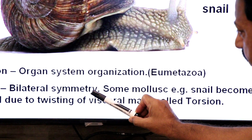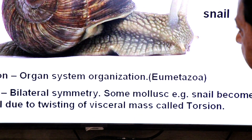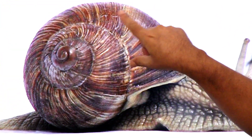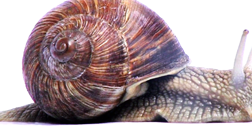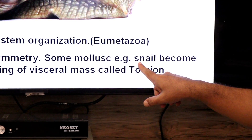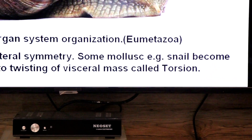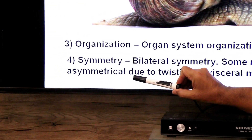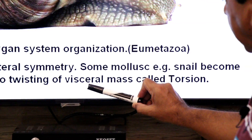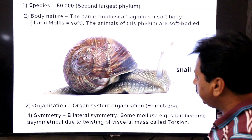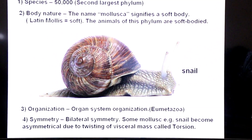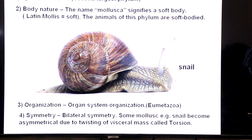However, in some Mollusca, symmetry is not present. For example, as you can see, the snail has a coiled shell, due to which the snail is asymmetrical — it does not have a particular symmetry. So some Mollusca, for example the snail, become asymmetrical due to twisting or coiling of the visceral mass, called torsion. Snail is a gastropod and in it this process of torsion occurs, due to which snails become asymmetrical.